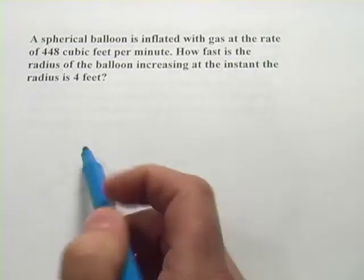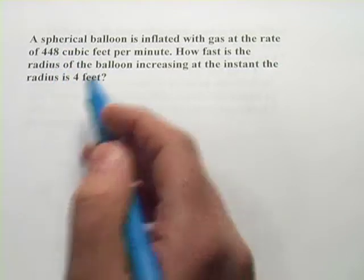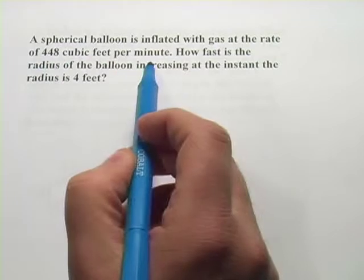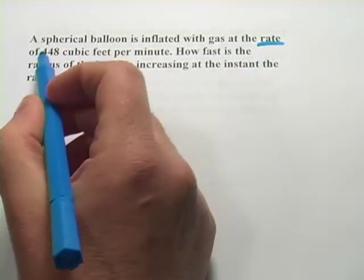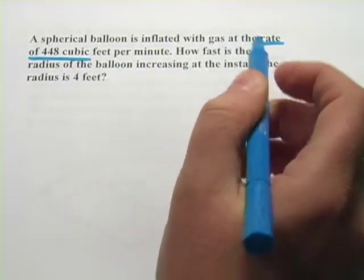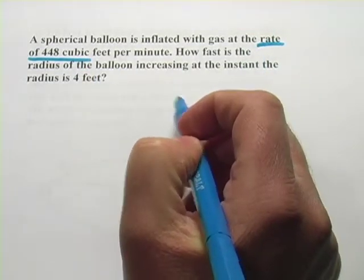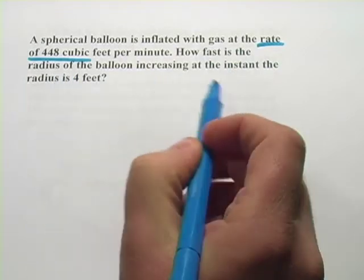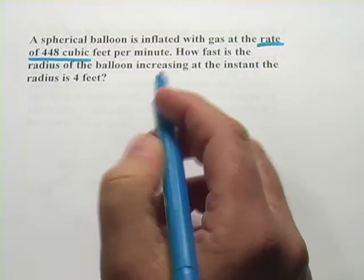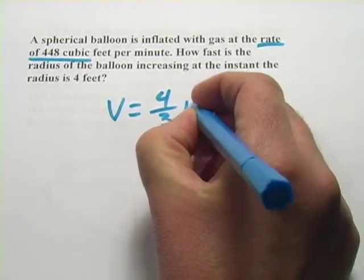Here's a typical related rate problem where a spherical balloon, so a balloon that happens to be in the shape of a perfect sphere, is being inflated with gas at the rate of 448 cubic feet per minute. This term rate should put your antenna up right away. So you know you're going to have a formula for this volume of the sphere and take the derivative, and that's going to give you the rate at which the volume is changing. The question is, how fast is the radius of the balloon increasing at the instant that the radius is 4 feet? So let's start here with a formula for the volume of the sphere. And that is volume equals 4 thirds pi r cubed.